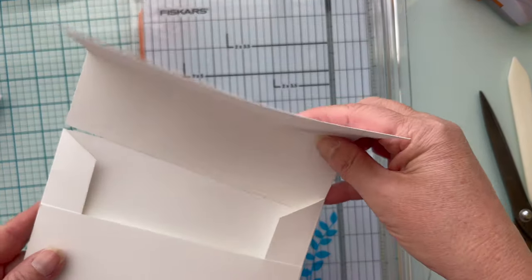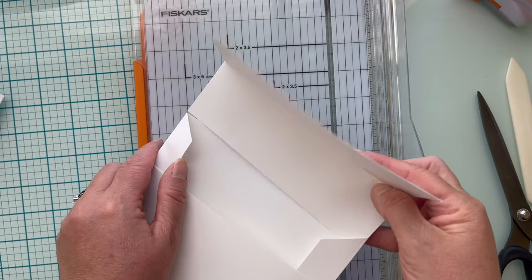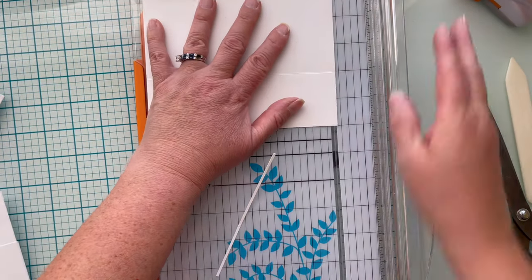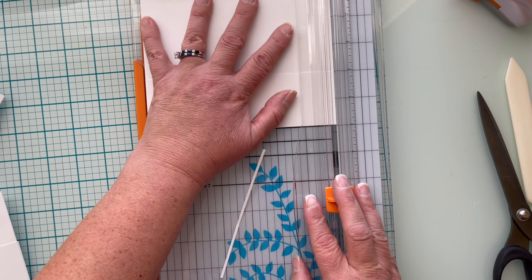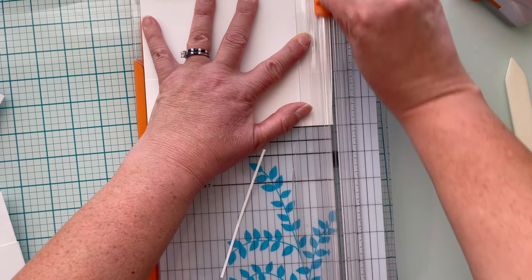We're going to check it again and it's still not quite right so we're going to take off yet again just a smidgen of cardstock. You can see that's hardly measurable but it makes a world of difference.